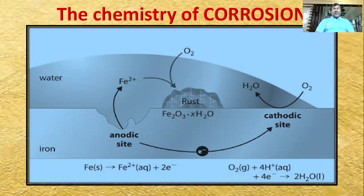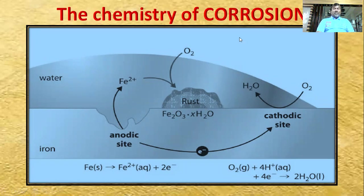Due to the electrochemical reaction of the iron material, corrosion forms as a layer on the surface. When iron — such as a nail — comes into contact with moisture in the air and also oxygen, it forms hydrated iron oxide, Fe₂O₃·xH₂O, where x may be one, two, three, or four molecules of water.